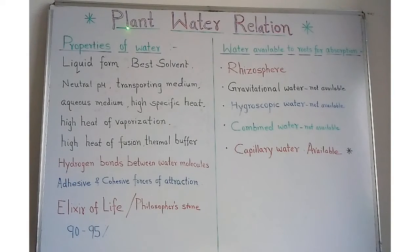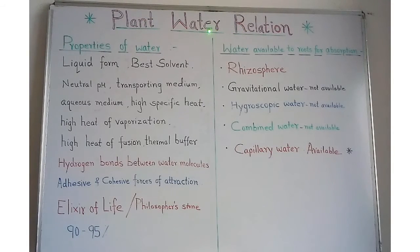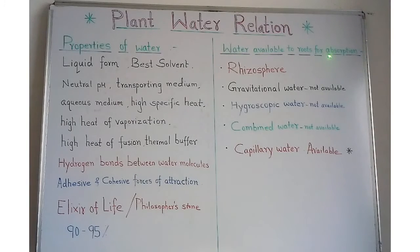Students, today we are going to start a new lesson: plant water relation. In this lesson we have to study only three topics, as the major part is deleted. The three topics are properties of water, water available to roots for absorption, and water absorbing organ. Before that we will study about water first.